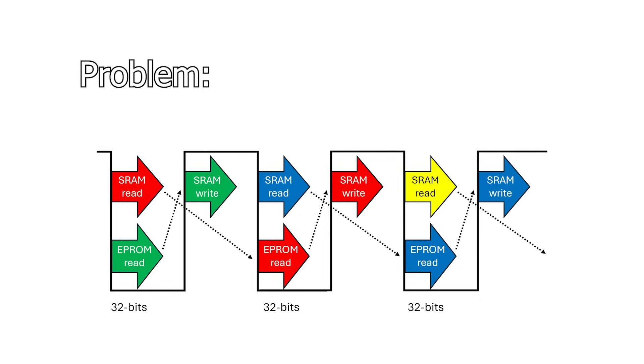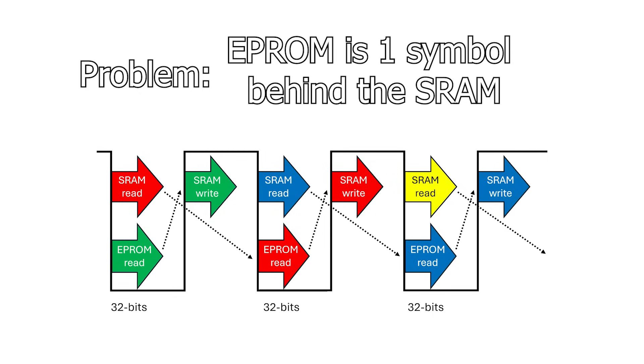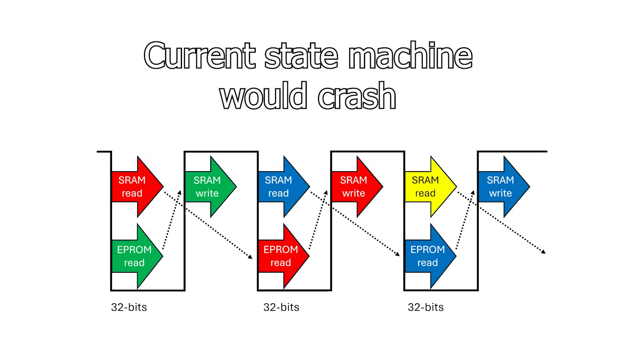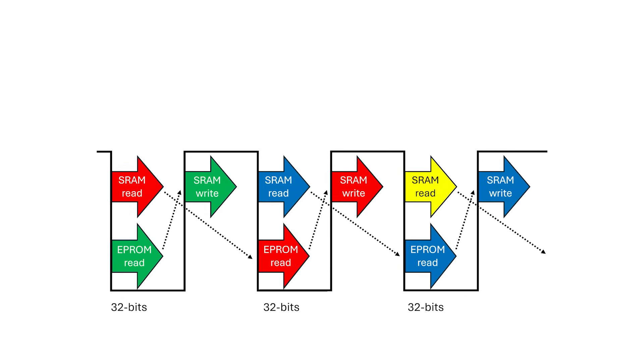Of course, there's a problem. In a pipeline design, the EEPROM is always one symbol behind. If I run the existing state machine as is, everything would fall apart. If I add in a couple of simple restrictions to the state diagrams, I can make this work.